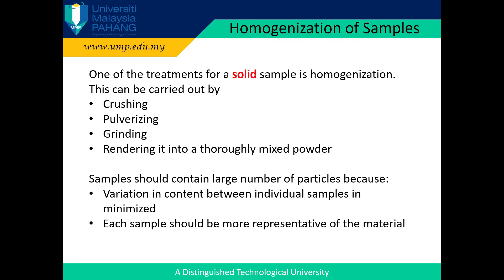Homogenization of samples. One of the treatments for a solid sample is homogenization. This can be carried out by crushing, pulverizing, and grinding, rendering it into a thoroughly mixed powder. Subdividing and mixing a material increases the homogeneity of the sample. The smaller the particle size, the lower the error in analyzing a given weight of material. Small particles enable us to minimize the number of particles in each reasonably sized sample while assuring they mix well, thus minimizing variation in content between samples. Generally, small particles produce better samples.